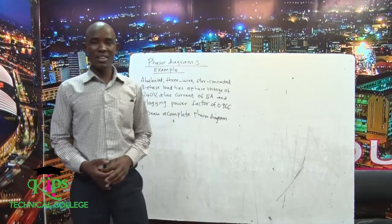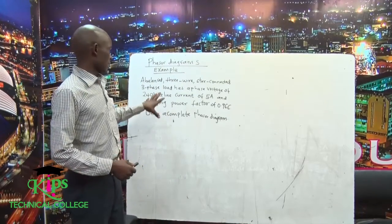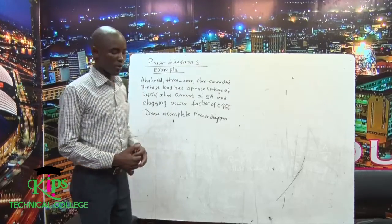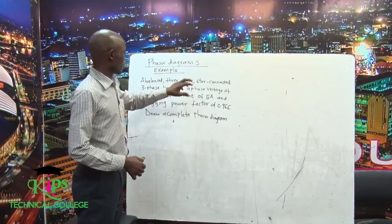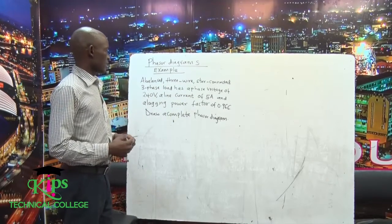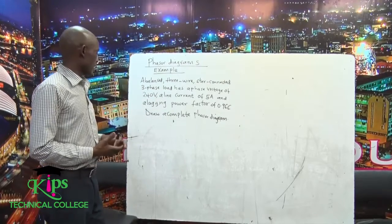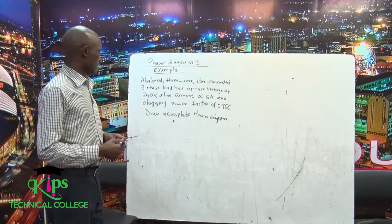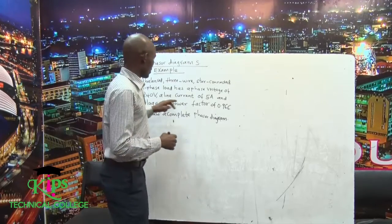Hi class, welcome to this session. We are discussing drawing a phasor diagram. This example is going to help us make that drawing. The example reads: a balanced three-wire star-connected three-phase load has phase voltages of 240, a line current of 5 amperes, and a lagging power factor of 0.966. Draw a complete phasor diagram.